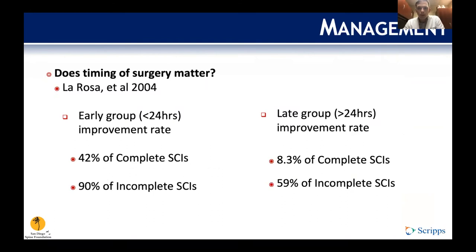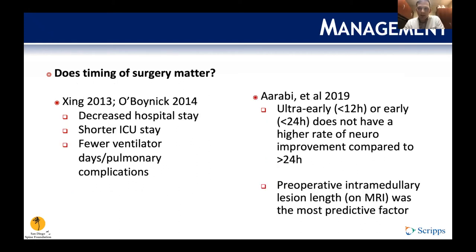For surgical timing, La Rosa's study showed that early surgery — less than 24 hours — resulted in improvement in almost 50% of complete spinal cord injuries and 90% of incomplete injuries, compared to late surgery which showed only about 10% improvement in complete and 60% in incomplete. This indicates we should operate as soon as patients are medically cleared. Early surgery also decreases hospital stay, gets patients out of the ICU faster, and gets them off the ventilator faster. The difference between less than 12 versus less than 24 hours doesn't seem significant, and cord damage on MRI is probably the best predictor of outcome.